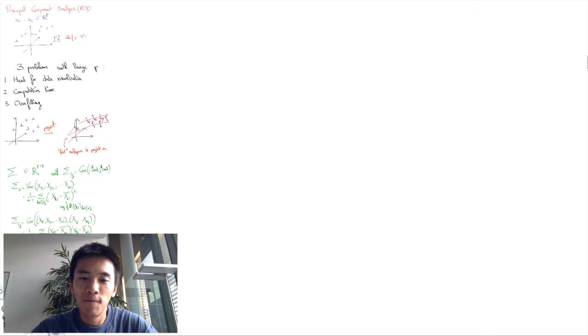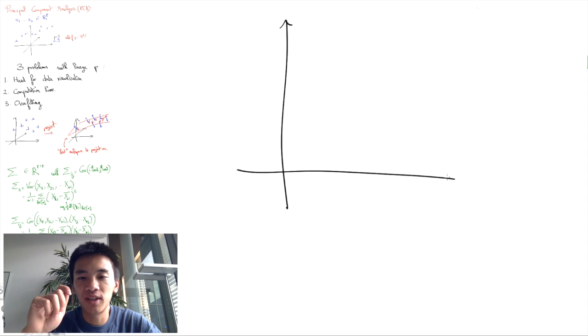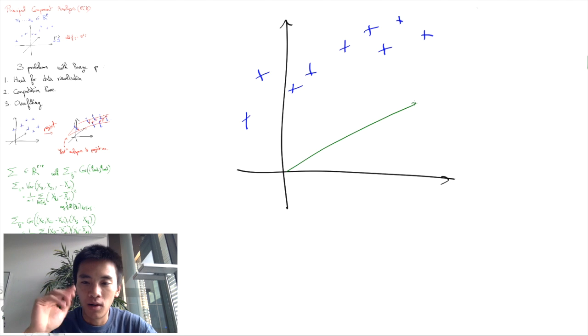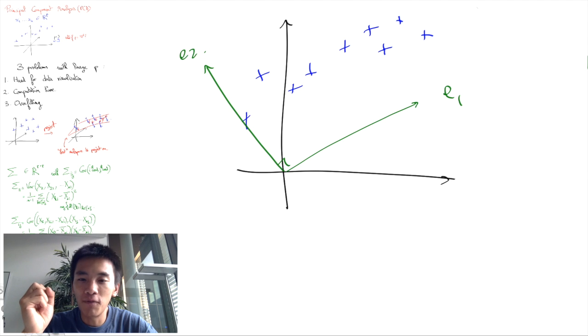In other words, in this new coordinate system, variations along the ei axis are uncorrelated with variations along the ej axis. This is pretty cool because it means that we have good reasons to think of the different coordinates in sort of independent manner.